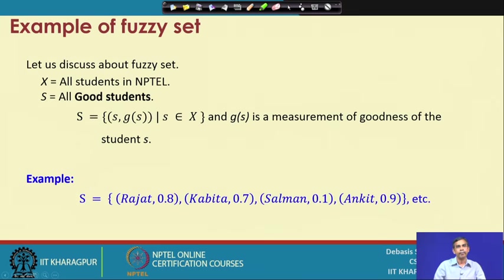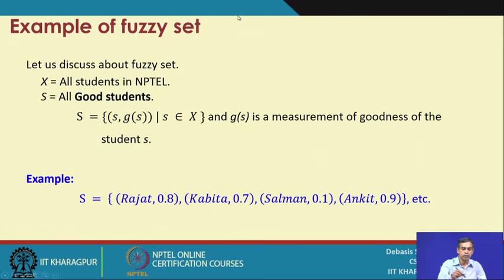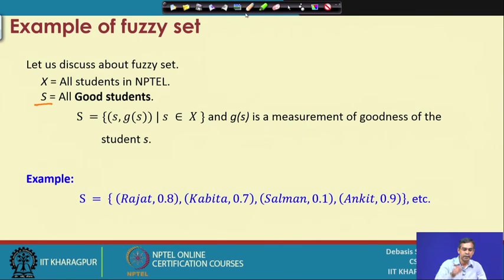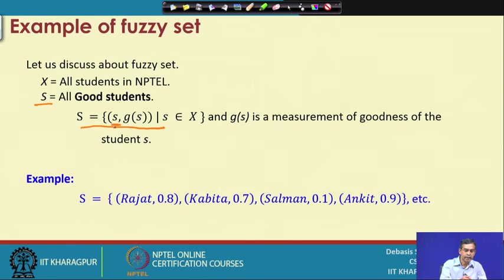This bigger region is basically called the universe of discourse, in this case it is X. All regions have a solid boundary, and that is why they are called crisp sets. Like the crisp set, the fuzzy set is also almost similar but with a little difference in representation. For example, suppose X denotes a set and let this set be all students in NPTEL — this is the universe of discourse in this case. Let us define one set belonging to X; let this set be S, and we define this set S as all good students.